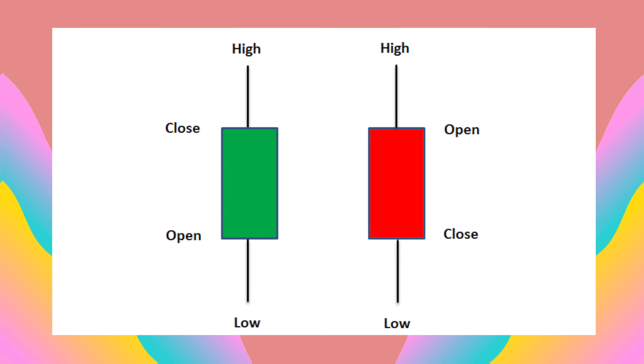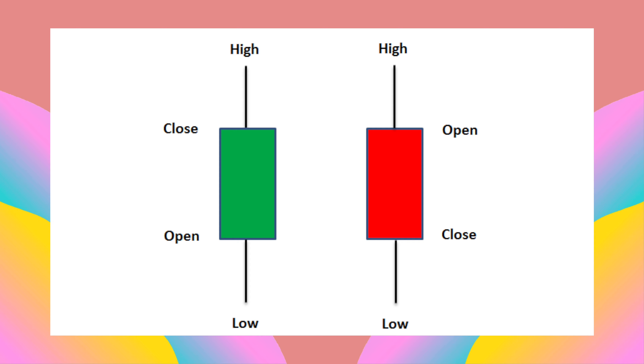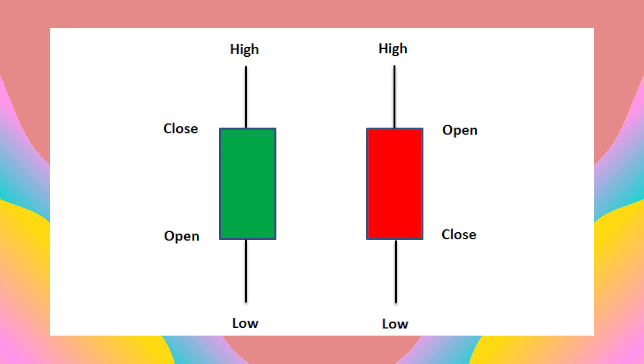A candlestick is made up of a body and two wicks. Candlesticks show four price points: open, close, high, and low.